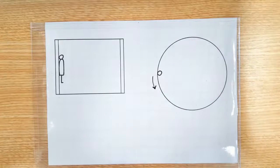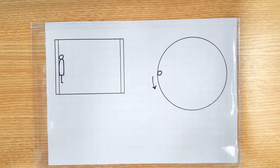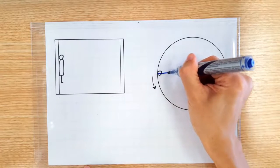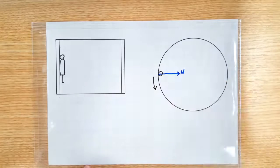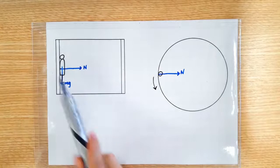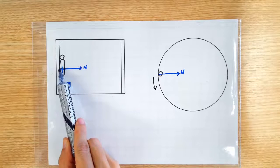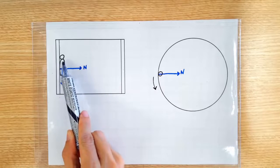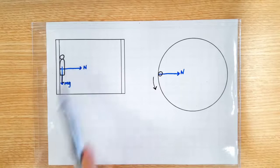So what could possibly provide the required centripetal force? Well, it has got to be the normal contact force between that person and the wall of the drum. So back to this view. So we know that the wall is exerting a normal contact force onto the person providing the required centripetal force.